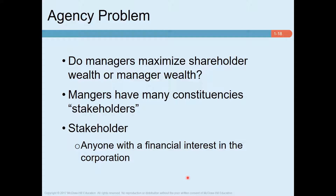In the last video we discussed that the ultimate goal of a company is to maximize shareholders' wealth. That means managers should take only those decisions that contribute to maximizing shareholders' wealth or maximizing share price in the market. So there is an obvious question: do managers always take decisions consistent with shareholders' wealth maximization?